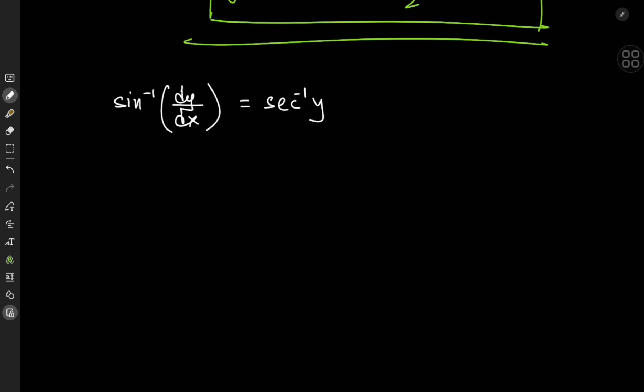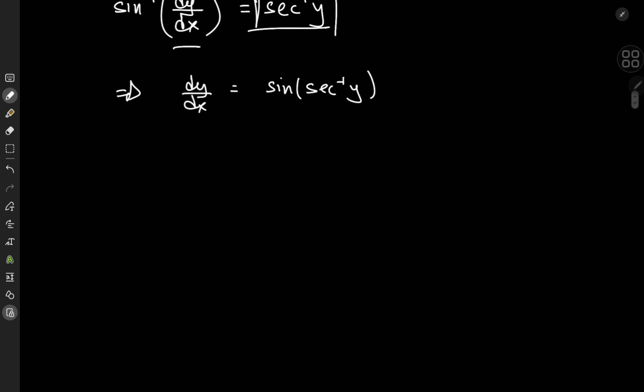Let me show you what I'm talking about. We have the inverse sine of the derivative equal to some junk on the right-hand side. This implies that the derivative itself equals the sine of that junk. So we need the sine of the inverse secant of y.